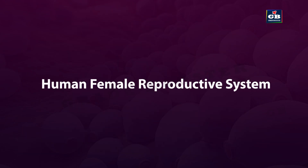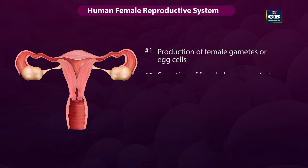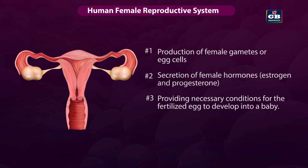Human female reproductive system performs four important functions: 1. Production of female gametes or egg cells. 2. Secretion of female hormones, i.e., estrogen and progesterone. 3. Providing necessary conditions for the fertilized egg to develop into a baby. 4. Menstruation.